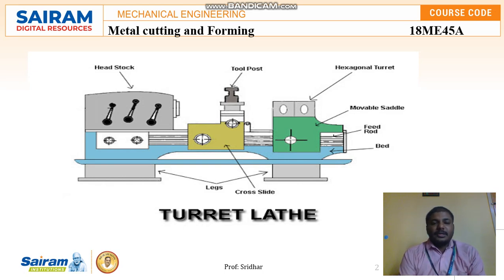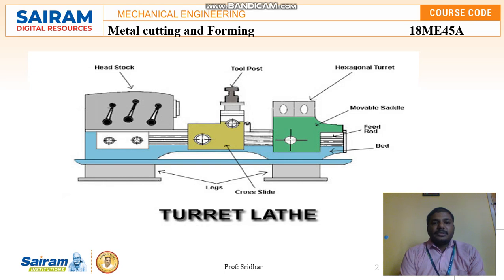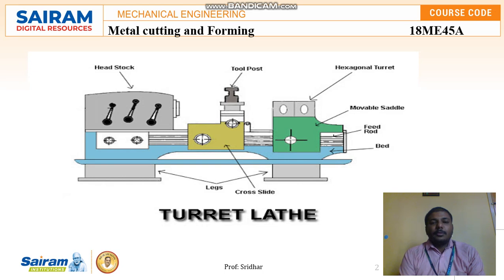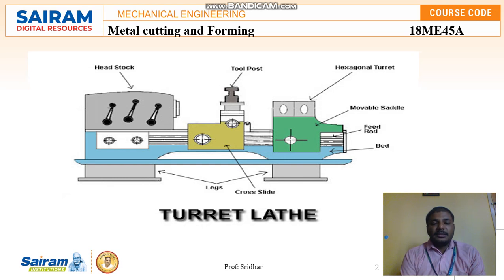We are going to see lathe machines which are called semi-automatic. In industries today, fully automated lathe machines are commonly used. In educational sectors, for practicals, some are semi-automatic and some are fully automatic. The main thing about the turret and capstan lathe — called semi-automatic machines — is that they are mainly used for long machining processes where a good surface finish is required.